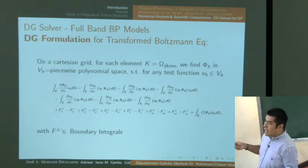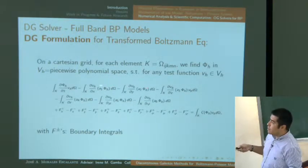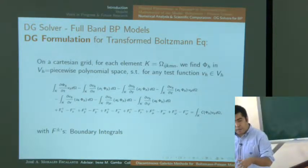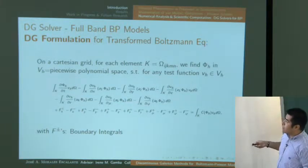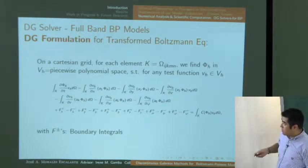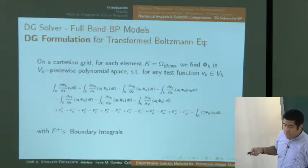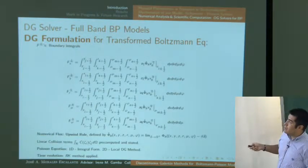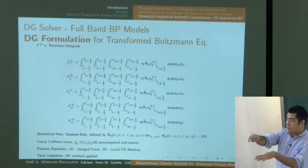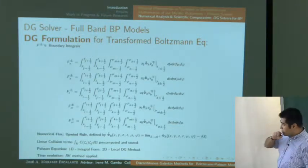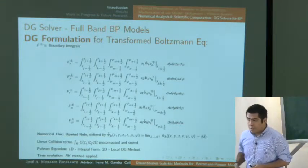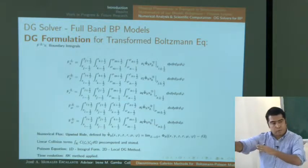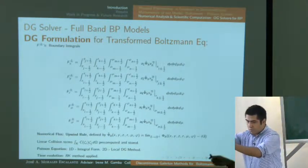The DG formulation for our problem integrates over the phase space domain, multiplies by a test function, and integrates by parts on the position and momentum parts in spherical coordinates. This yields boundary integrals from integration by parts plus the integral of the collision operator multiplied by the test function. The boundary integrals correspond to the numerical flux — the upwind rule is applied, choosing the value of the cell from which information is propagating.